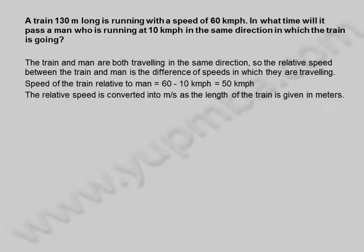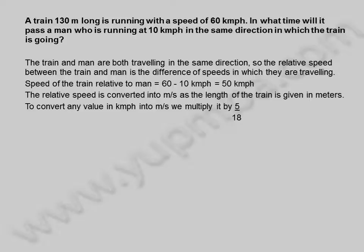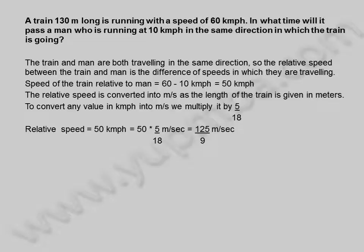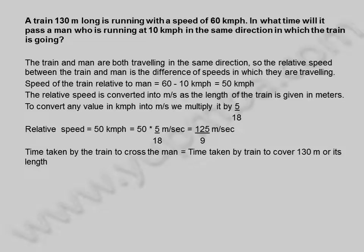The relative speed is converted into meters per second as the length of the train is given in meters. To convert any value in kilometers per hour into meters per second, we multiply it by 5 divided by 18. Relative speed is equal to 50 kilometers per hour, which is 50 into 5 divided by 18 meters per second, equal to 125 divided by 9 meters per second.